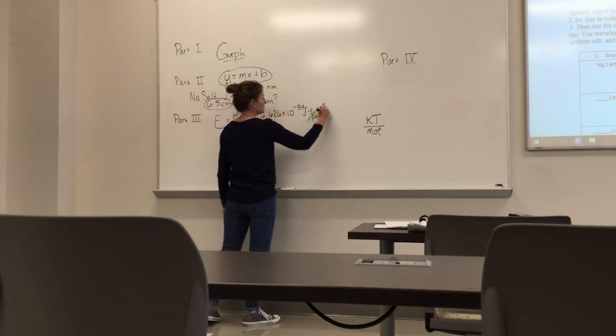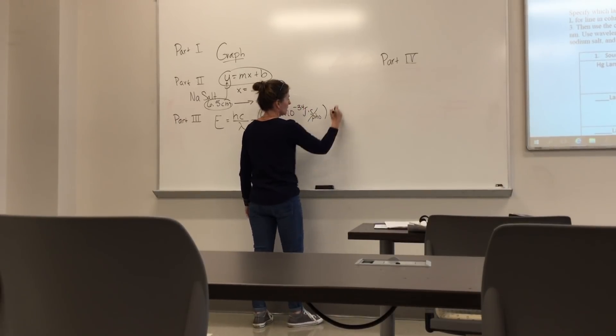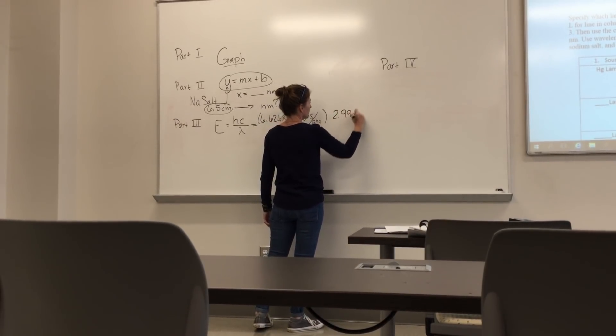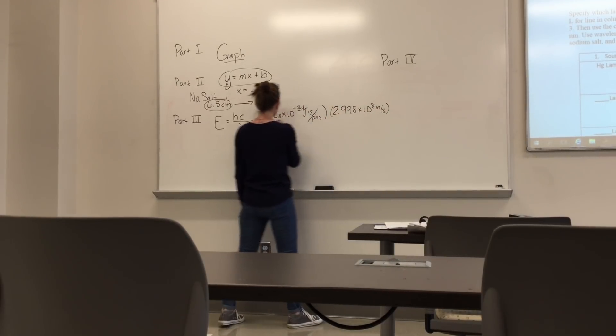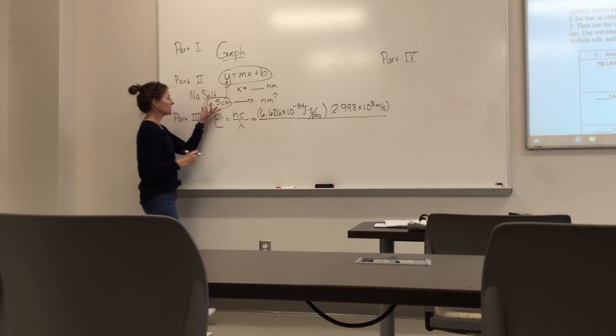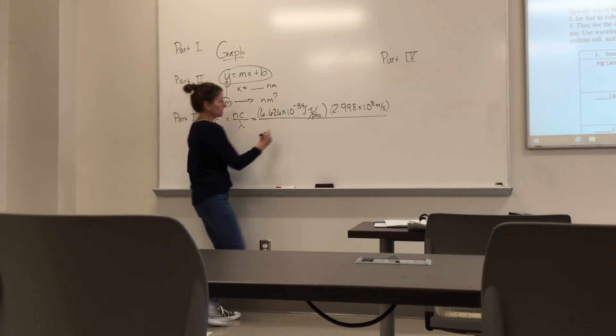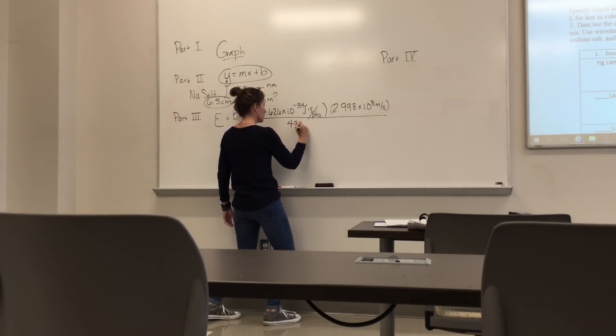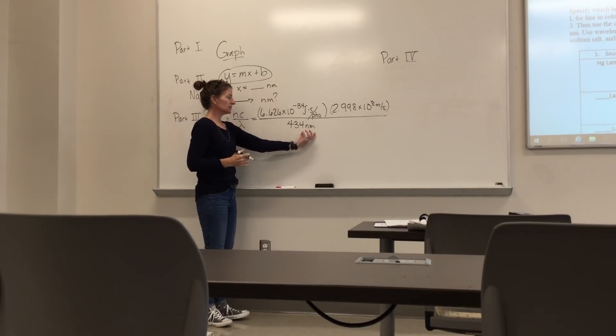And then we've got the speed of light. And that speed of light is also a constant, 2.998 times 10 to the eighth meters per second. And we have this wavelength, whatever the wavelength was from your 6.5 that you generated using the trend line from your graph. I'm going to make one up. So I'm going to say 434 nanometers. Now, the question is, can I leave this in nanometers or do I have to convert it?